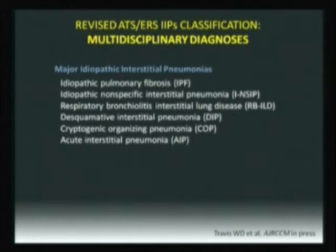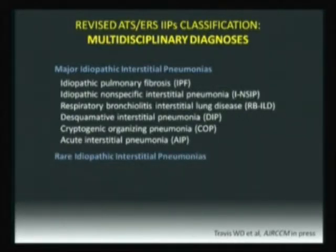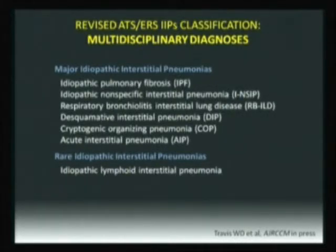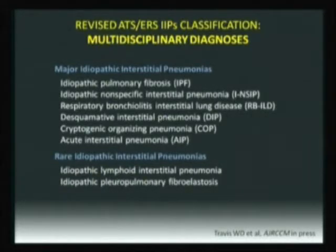AIP is a very rare entity — there are still cases but it is extremely rare. Most AIP cases are actually unrecognized exacerbations of IPF. The practical approach divides diseases into major and rare: major means you will find this disease in clinical practice almost daily; rare means patients you are probably not going to see. Then you have idiopathic lymphoid interstitial pneumonia and idiopathic pleuroparenchymal fibroelastosis — a new entity described first in Japan but now becoming more recognized.